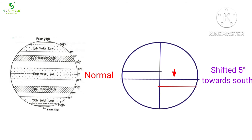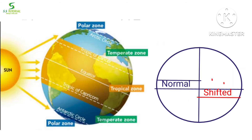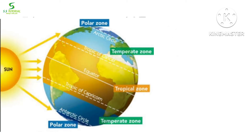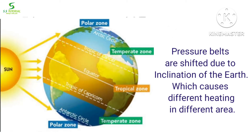Now let's know about the shifting of pressure belts. Pressure belts are not fixed in their latitudinal position; they shift with the change of seasons. This is because the earth is inclined 23 and a half degrees towards the sun. If the earth had not been inclined, the pressure belts would remain as described, but they shift due to this inclination.